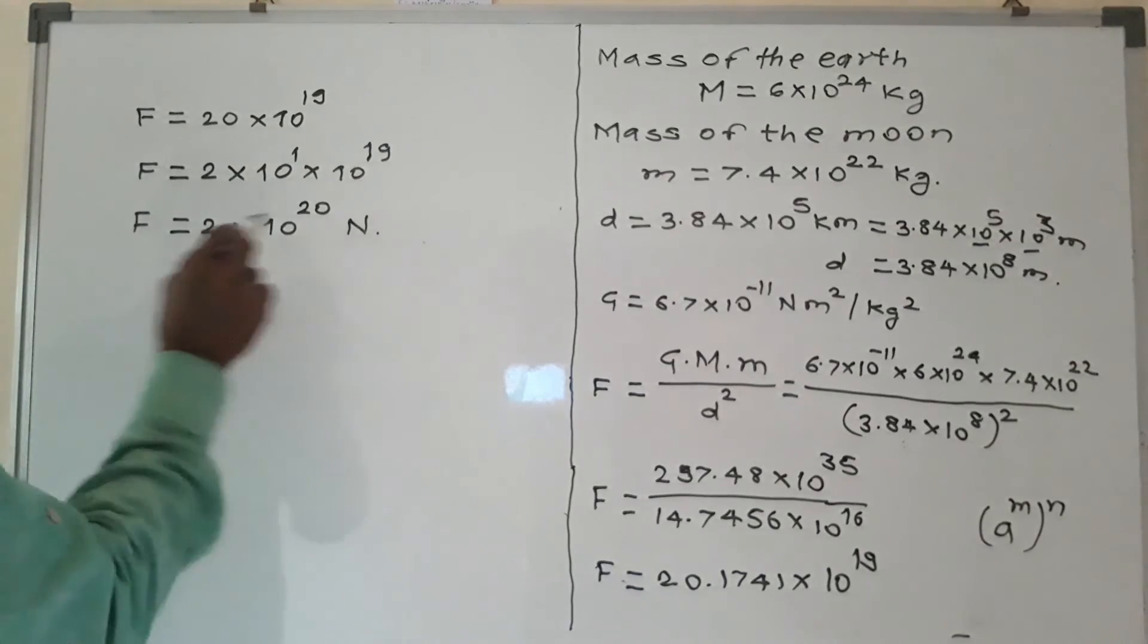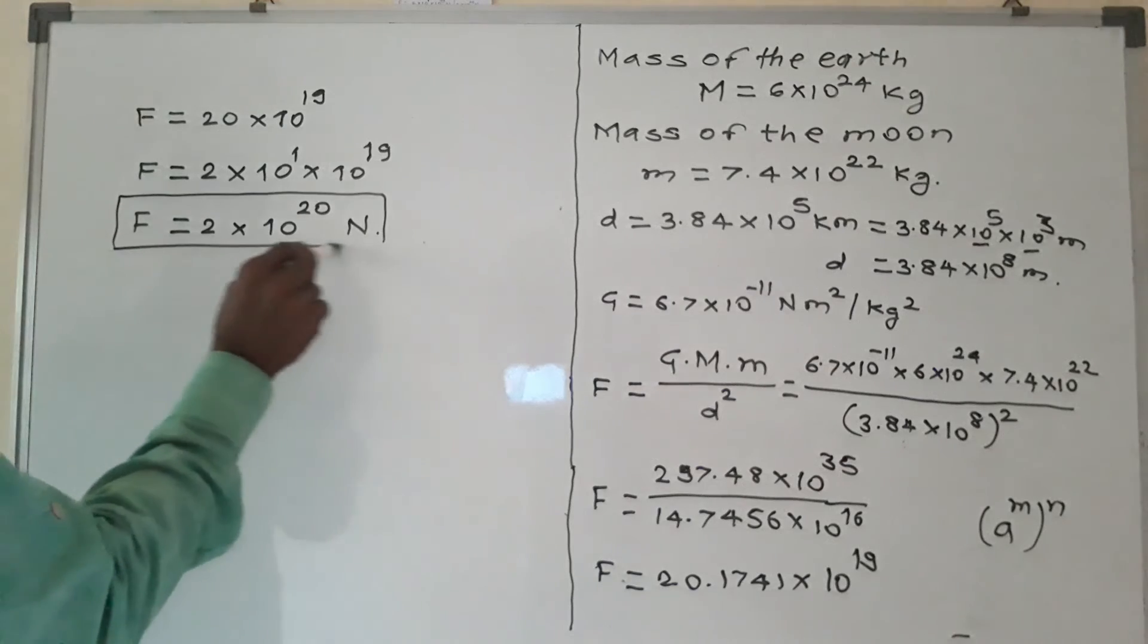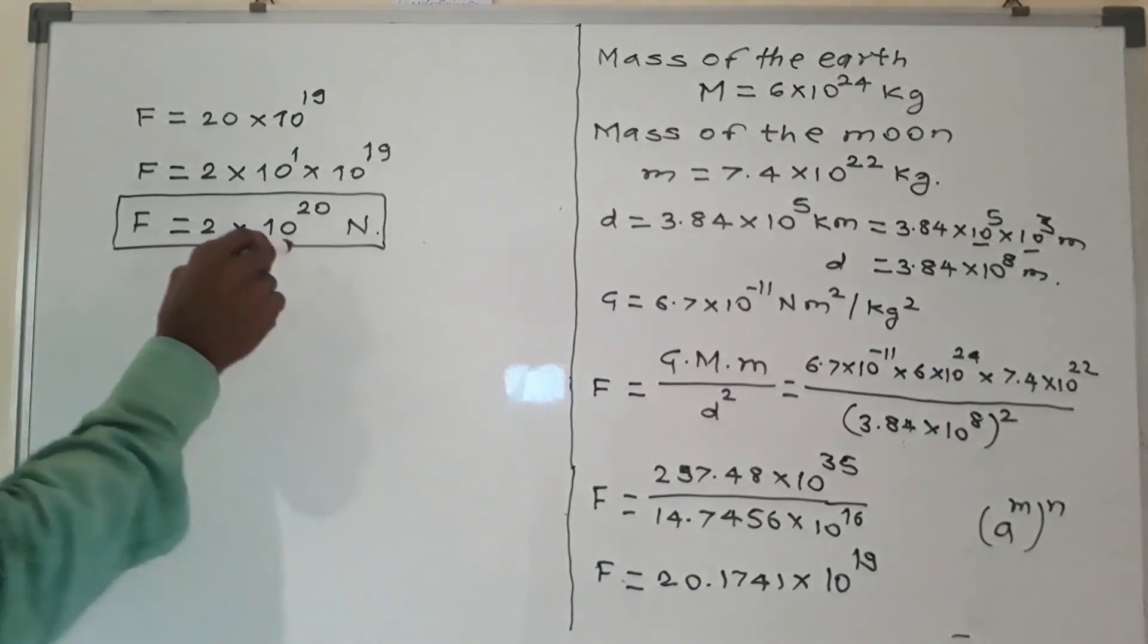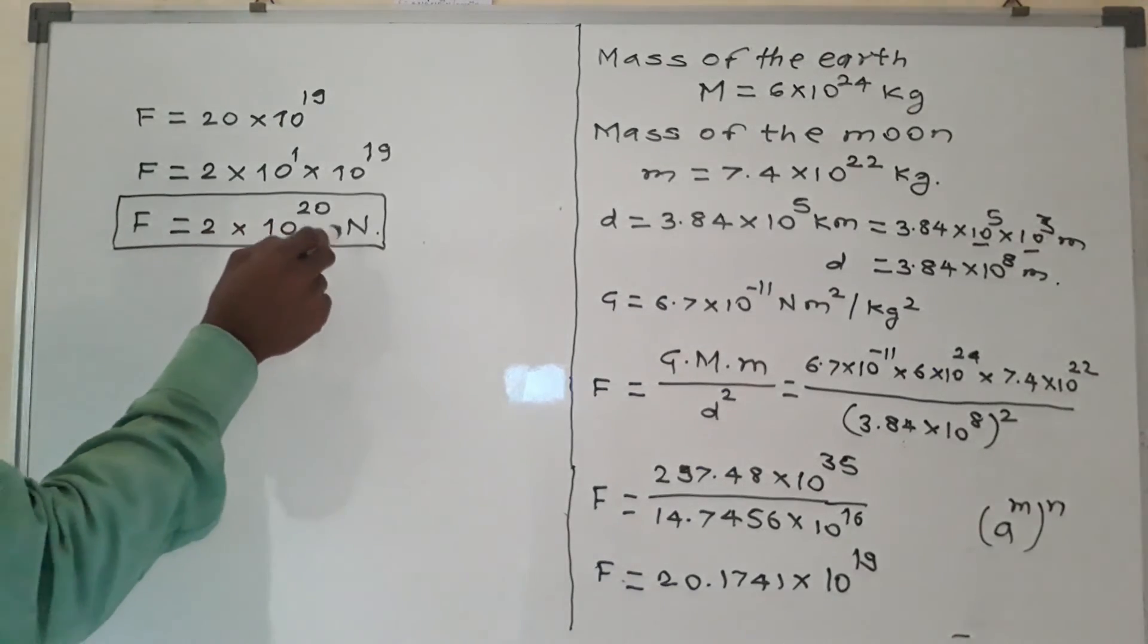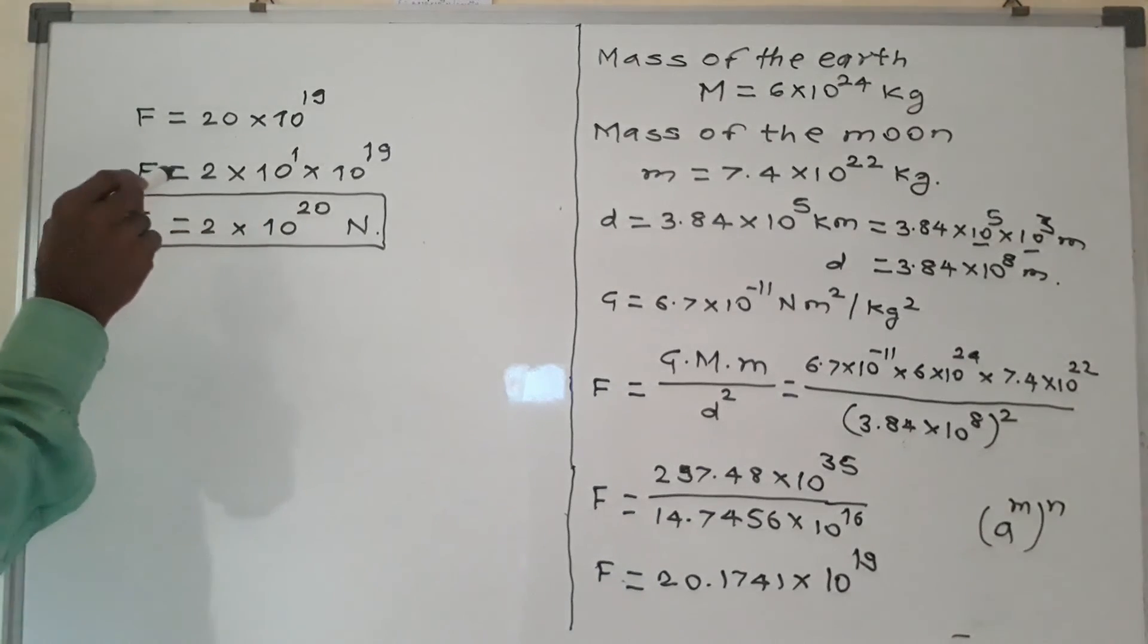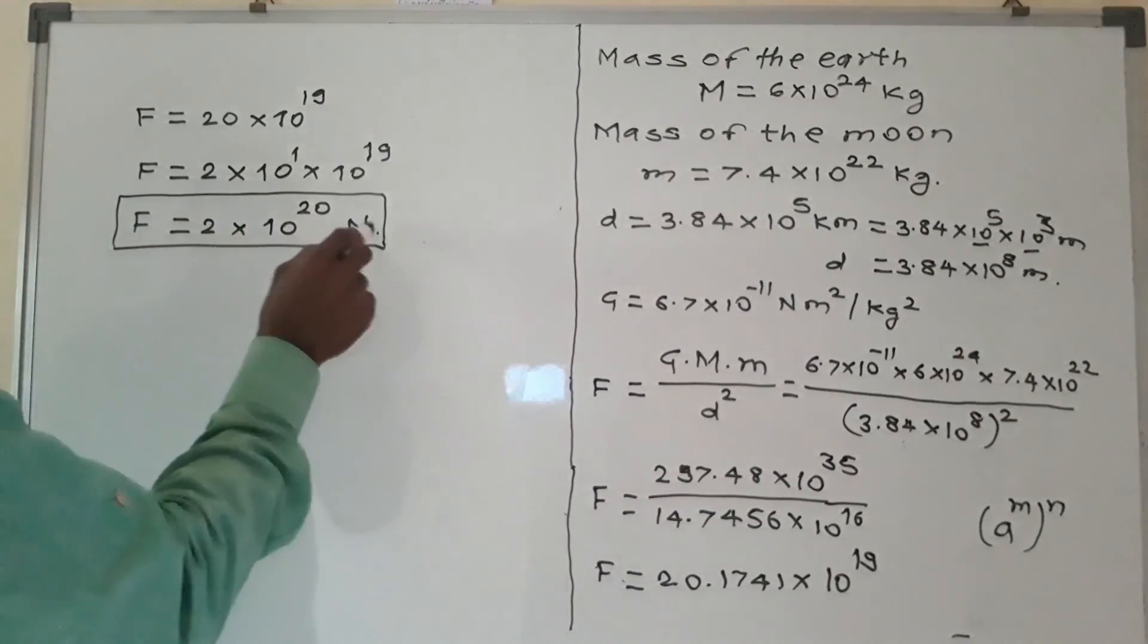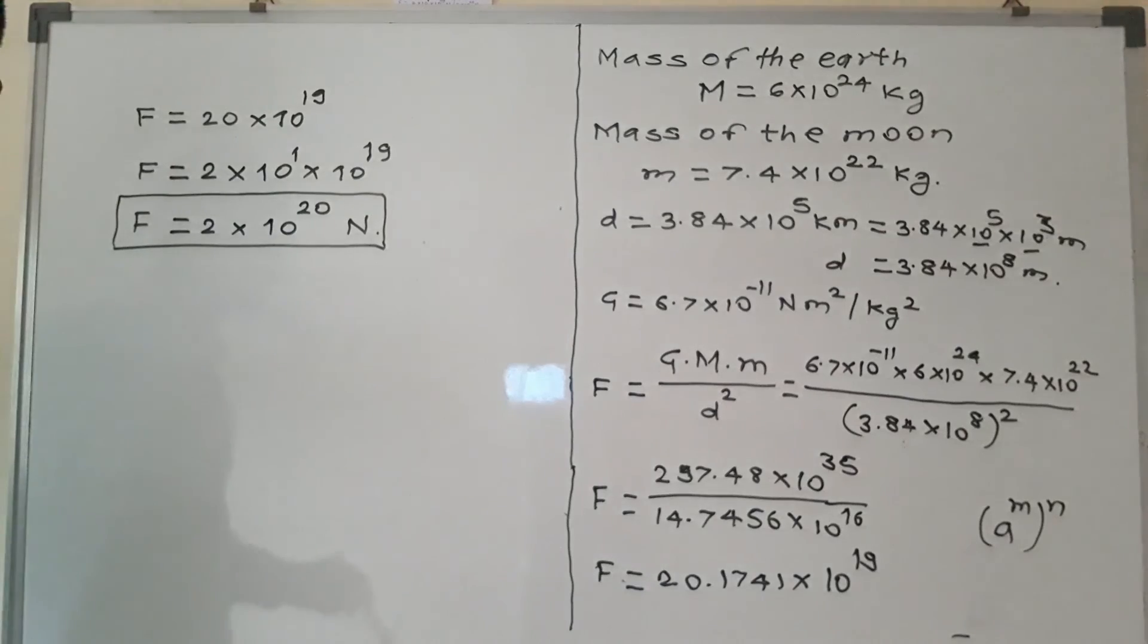Force in Newton. Therefore our final answer F is equal to - this is the force, the gravitational force of attraction between the earth and the moon - F is equal to 2 into 10 raise to 20 Newton. This is our final answer.